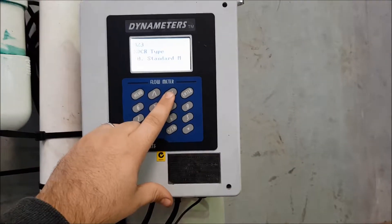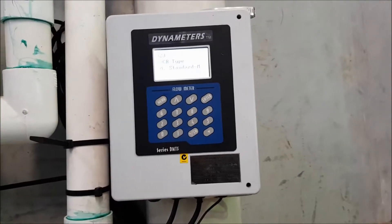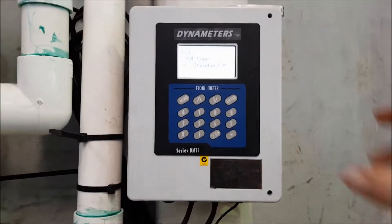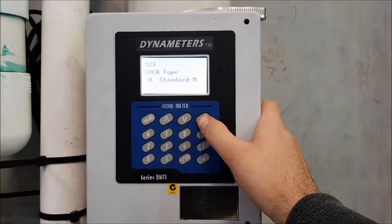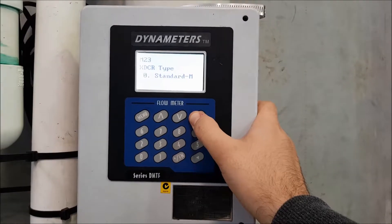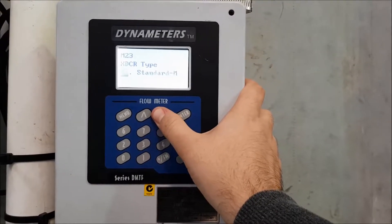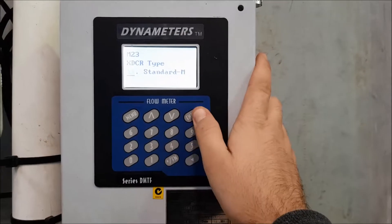Okay, now your transducer type. In my case, I'm using standard M. But if you have purchased a different set of transducers for different sized pipes, just change that here as well. So I'll select standard M.